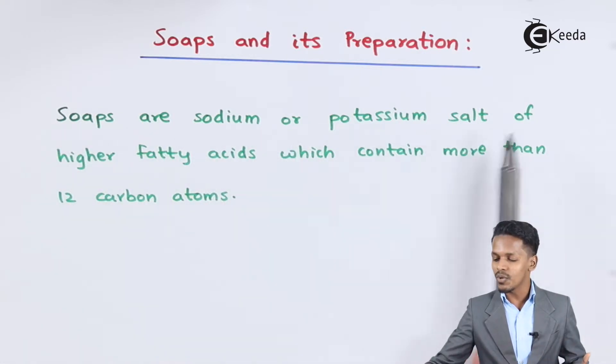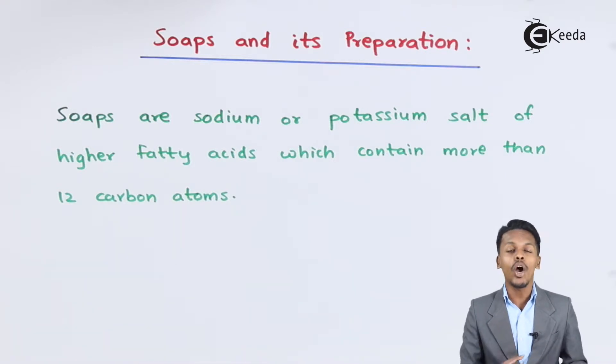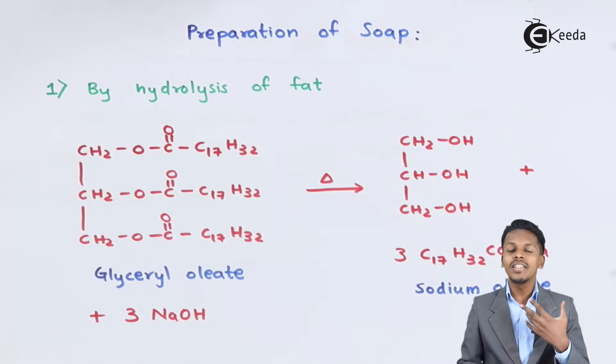Soaps are sodium or potassium salts of higher fatty acids which contain more than 12 carbon atoms. Based on that, let us understand how we can prepare soaps. There are basically two main methods to prepare soap.